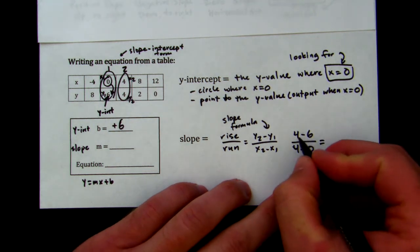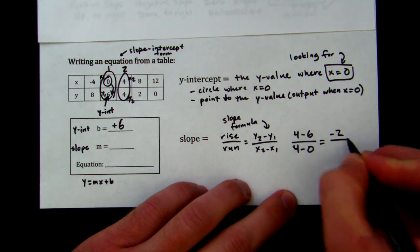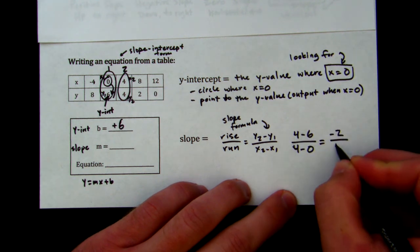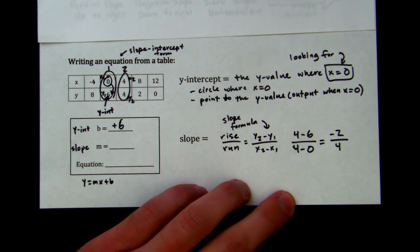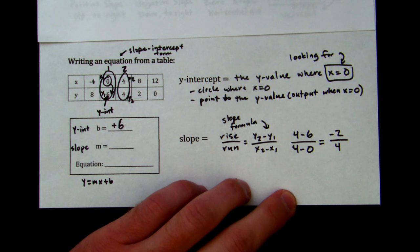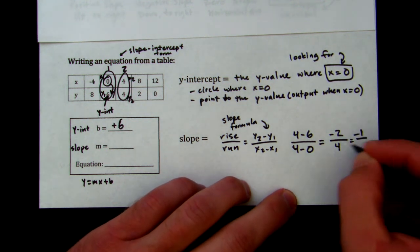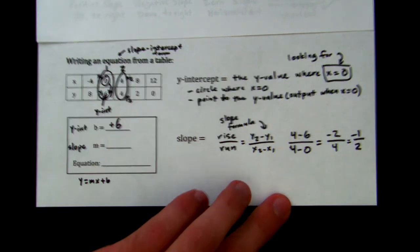So I'm going to simplify here. 4 minus 6 is negative 2. 4 minus 0 is 4. And can I simplify this? You betcha I can. Again, 2 goes into both numbers. So I can divide negative 2 by 2 and I get negative 1. I can divide 4 by 2 and I get 2.